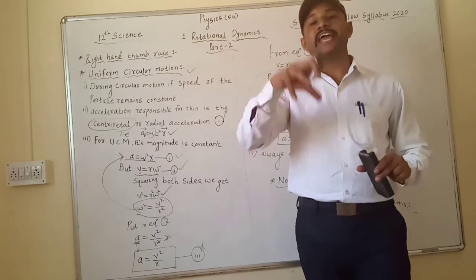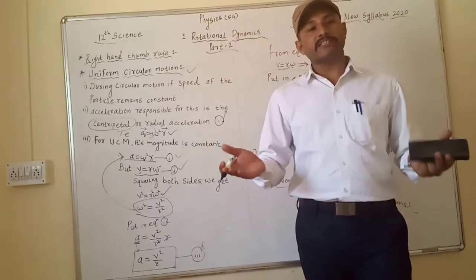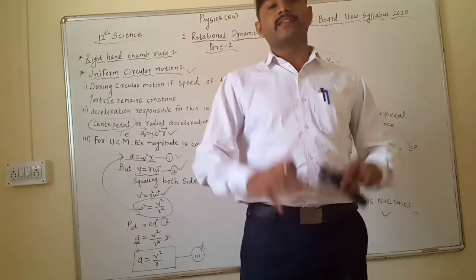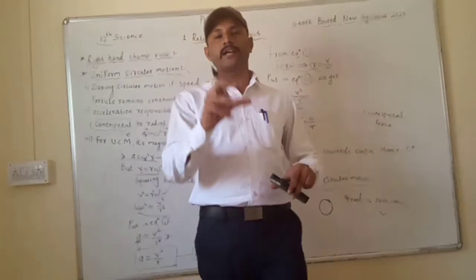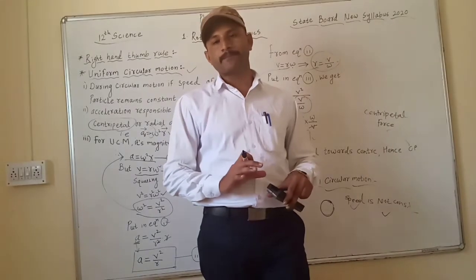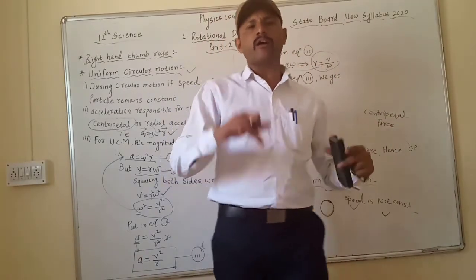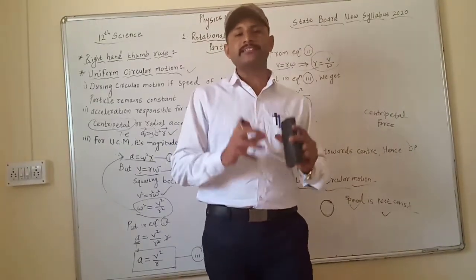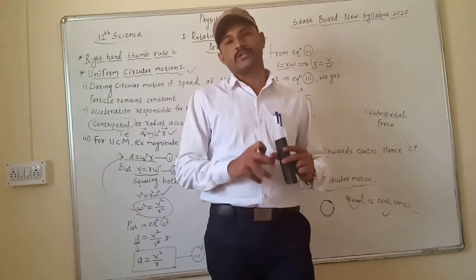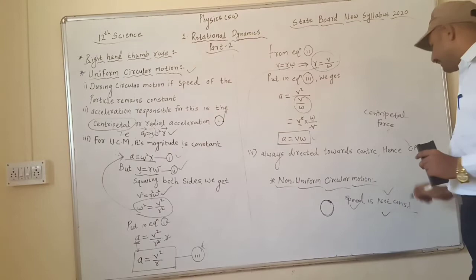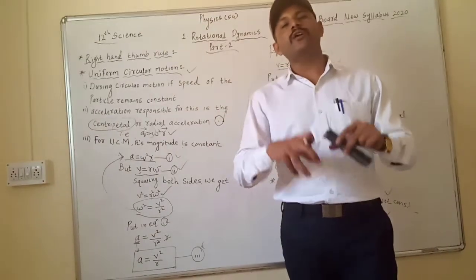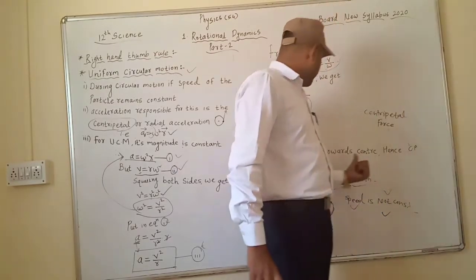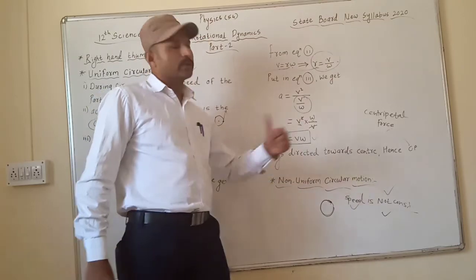In non-uniform circular motion, there is also a change in acceleration. Because when velocity changes, acceleration also changes — since acceleration is defined as the rate of change of velocity. When the magnitude of velocity changes, the acceleration also changes. That is the key feature of non-uniform circular motion.